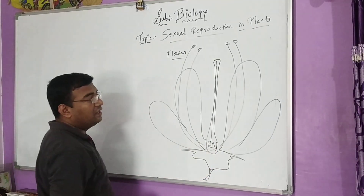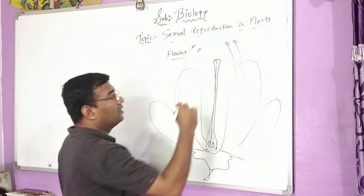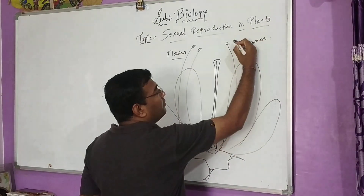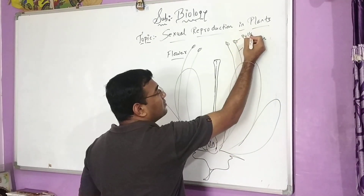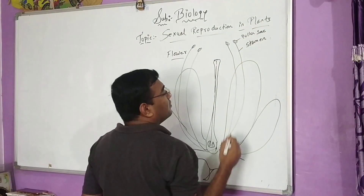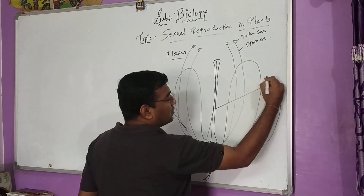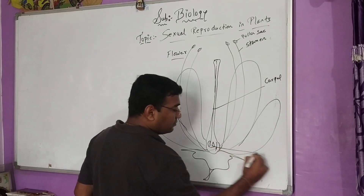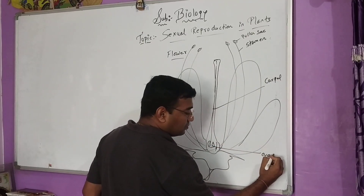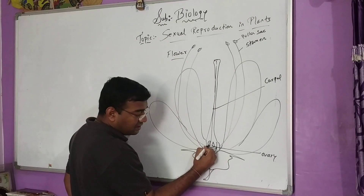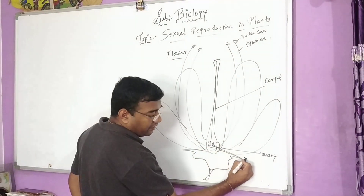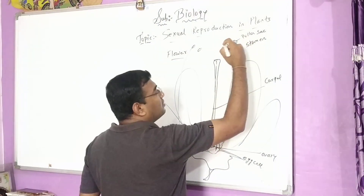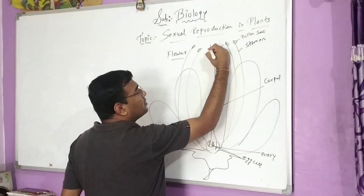This is the flower — we have seen this kind of diagram. This is the male part, we call it the stamen, with a pollen sac. The female part is the carpel, with an ovary. The ovary consists of egg cells, and the pollen sac consists of pollens.